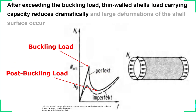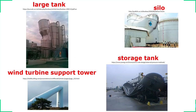Here are some examples of how shell failure looks in real life. We have a large tank structure which failed due to thermal differences, a wind support tower which buckled due to extreme wind loads, and a silo and storage tank which buckled due to external pressure.